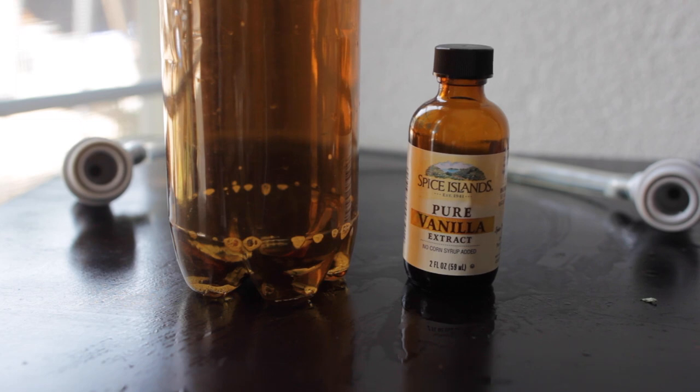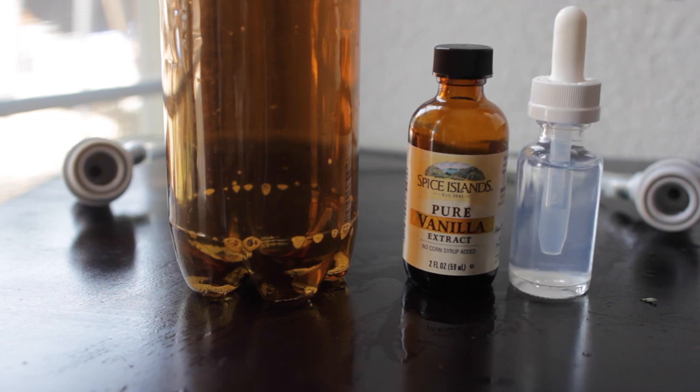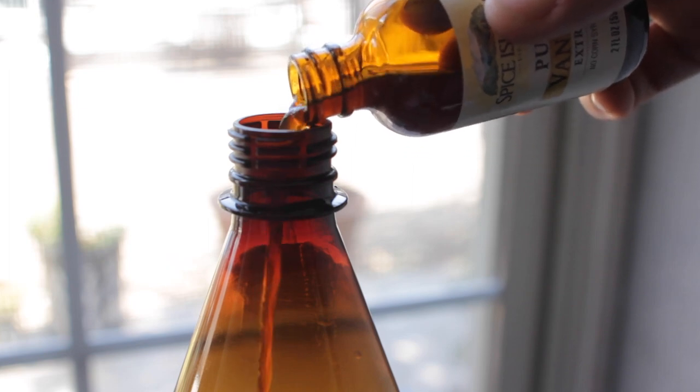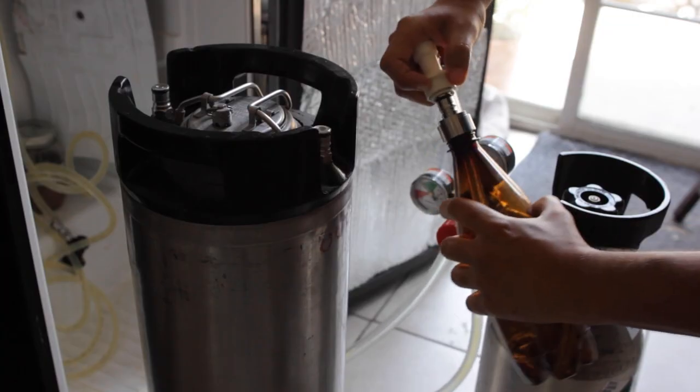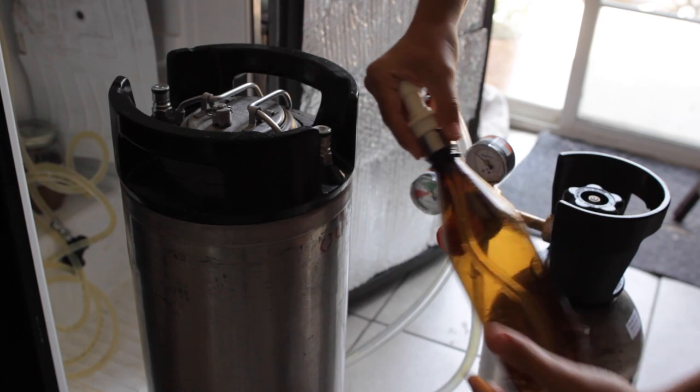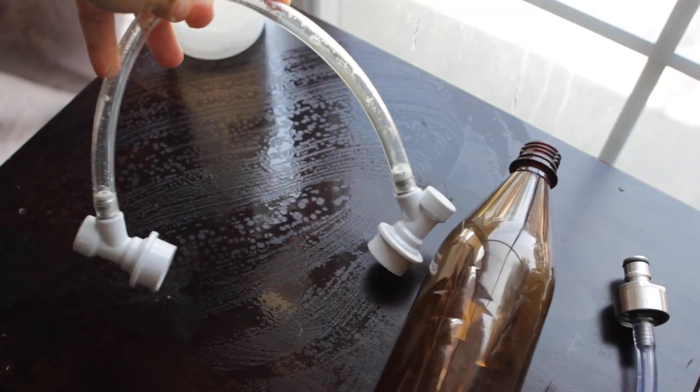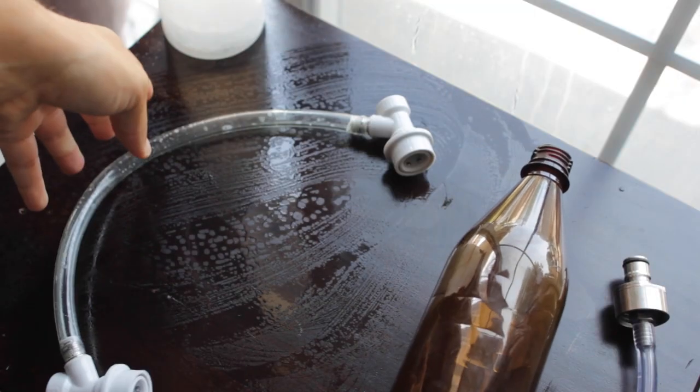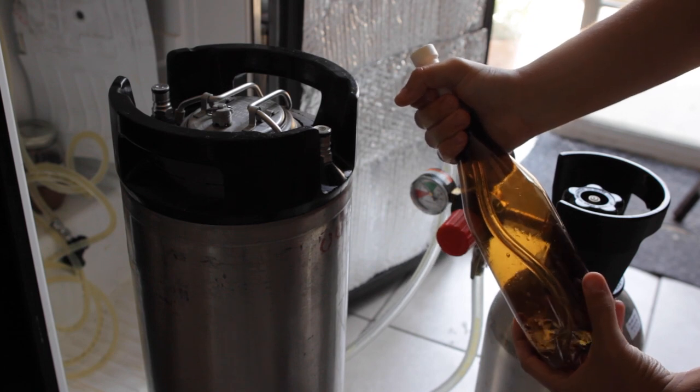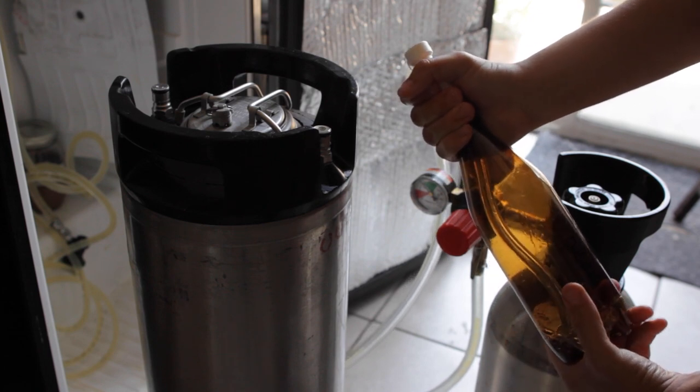You can also use this to dose a keg or pressurized vessel with an extract, tincture, or fining agent like biofine. You just add your ingredient to the bottle, cap it, and then add more pressure than whatever vessel you're adding it to. Then using a jumper cable, you can pressure transfer the ingredient in. As long as you purge the bottle and lines with CO2, it's a great oxygen-free way to dose your keg.